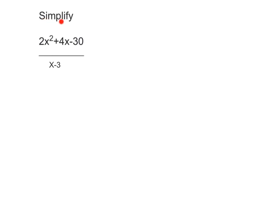This question asks us to simplify the expression (2x² + 4x - 30) / (x - 3). There are a few ways we could do this — we could use algebraic long division, for example, or we could try factorizing the top and bottom and see if anything cancels out. That's what I'm going to use now.